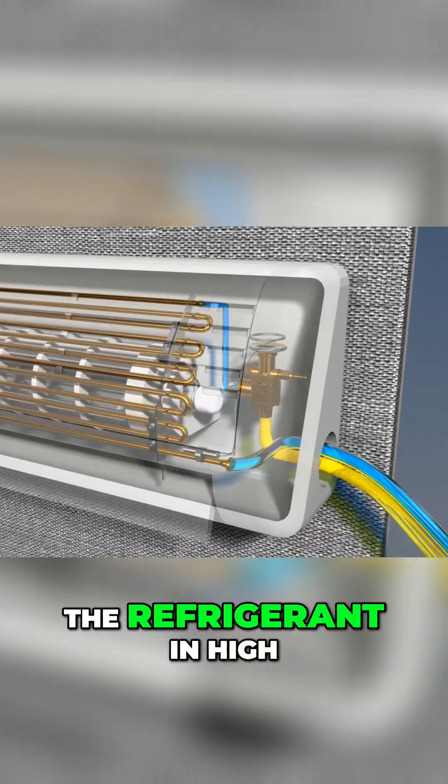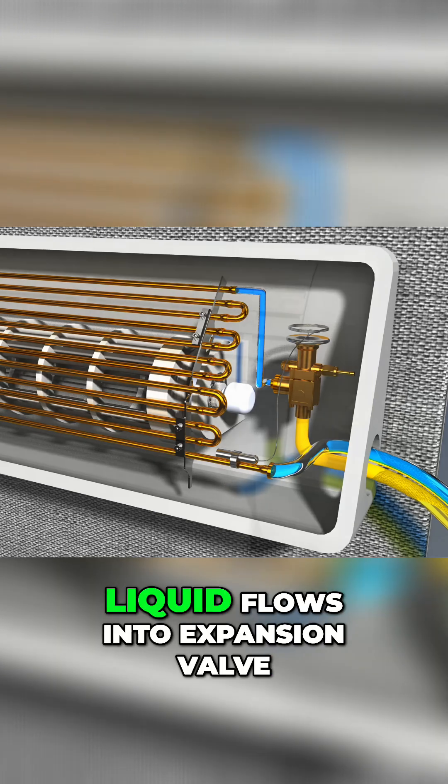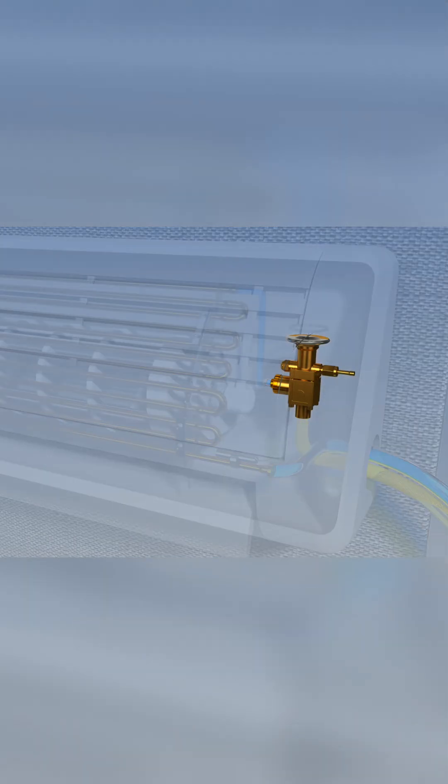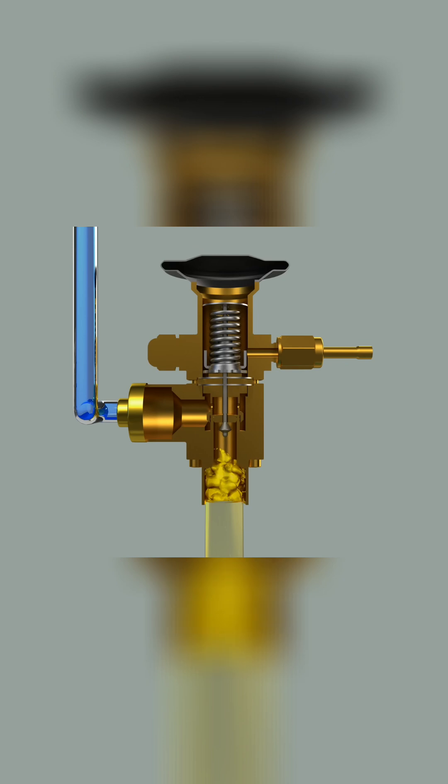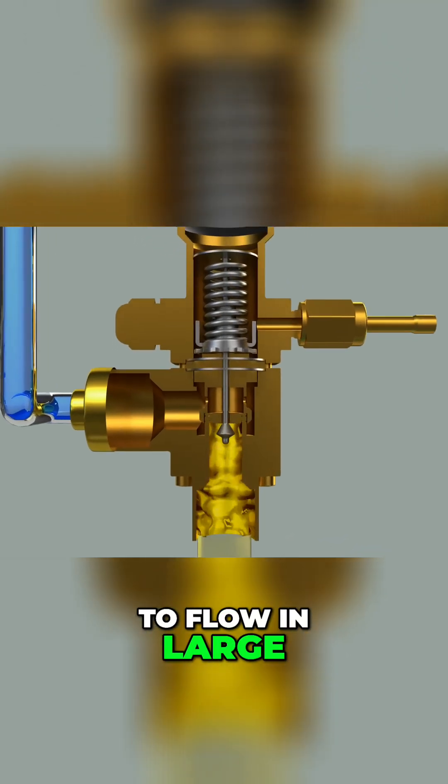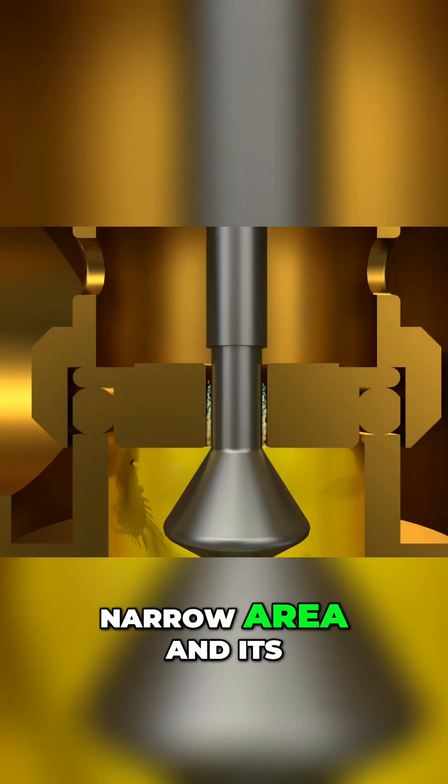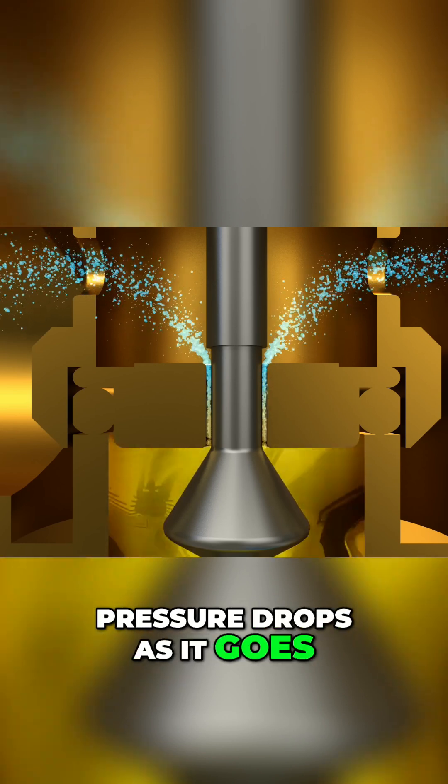The refrigerant in high temperature and high pressure liquid flows into the expansion valve. The refrigerant which used to flow in large space now passes through a narrow area, and its pressure drops as it goes.